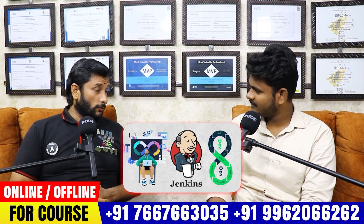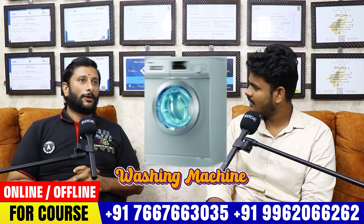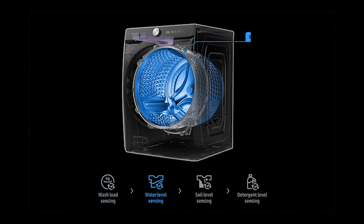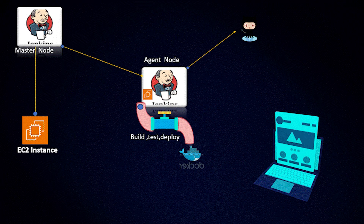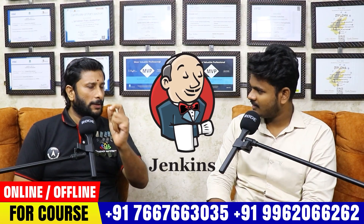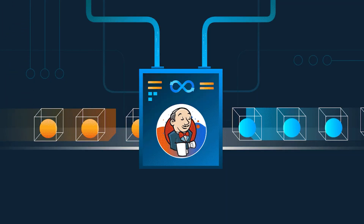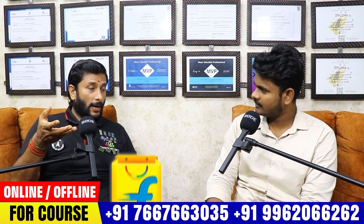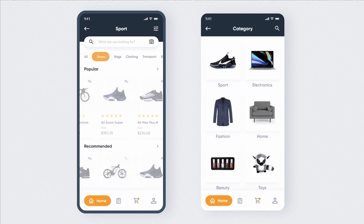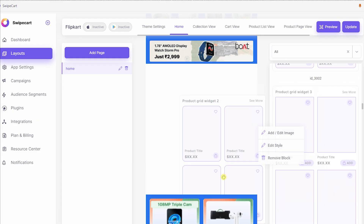Jenkins is a powerful tool. It is like a washing machine — you mix, monitor, rinse, and dry. You can integrate, develop, test, and deploy your code. Jenkins is a very powerful CI/CD tool. For example, with Flipkart, you can update daily data and apps — you can update your mobile app automatically without any disturbance.